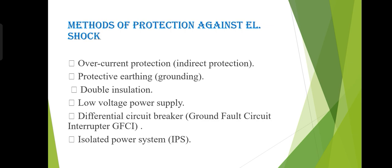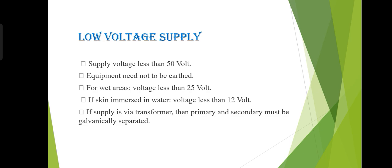Next, we see about methods of protection against electrical shock. There are various methods: over-current protection, indirect protection, protective earthing which is the method of grounding, double insulation, low voltage power supply, differential circuit breaker, ground fault circuit interruptor (GFCI), and isolated power system (IPS).